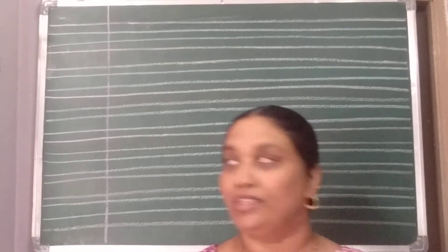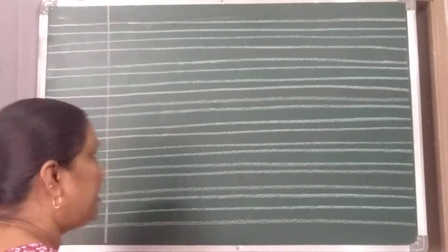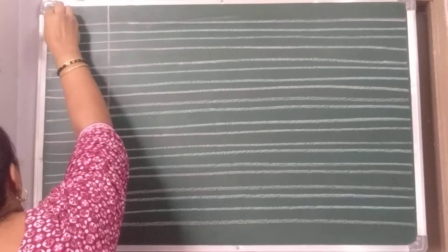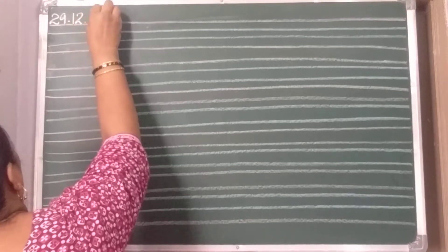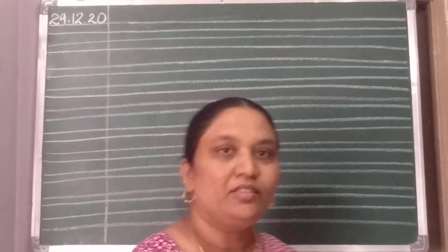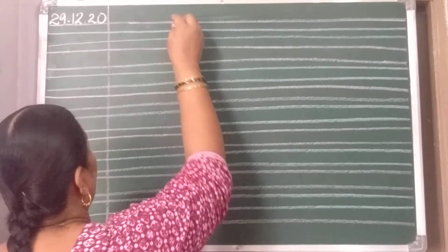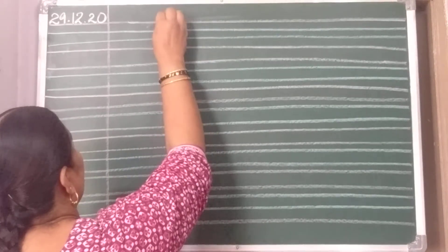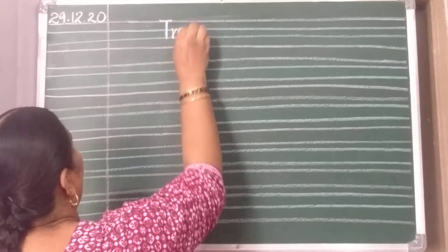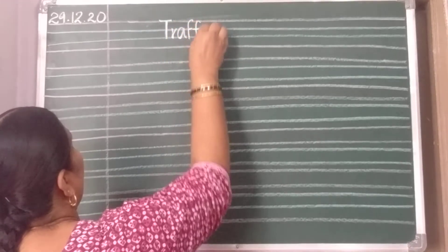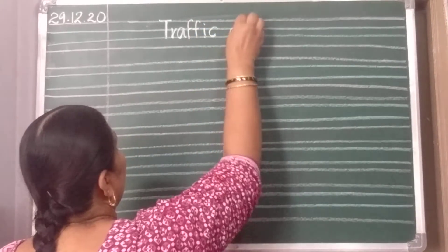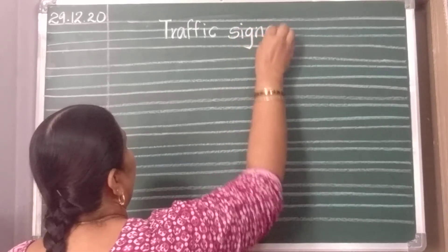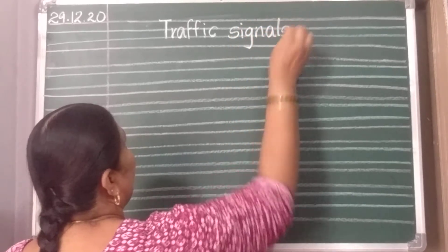Today we will write in a GK notebook. So get ready with your GK notebooks. You should write the date: 29.12.20. Now we are going to draw traffic signals. Write the heading 'Traffic Signals' — T-R-A-F-F-I-C, take a finger space and write S-I-G-N-A-L-S.